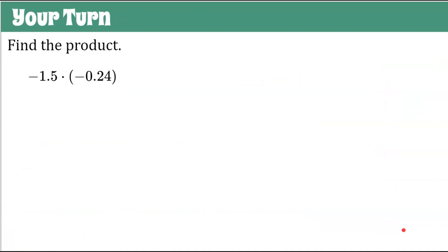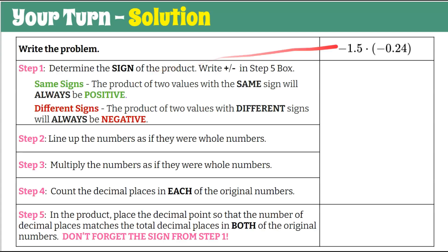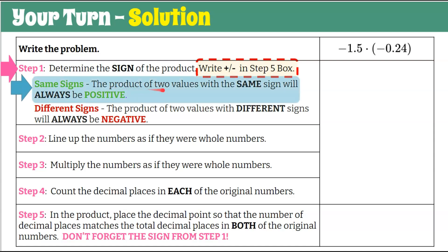One more for you to try. Find the product of negative 1 and 5 tenths multiplied by negative 24 hundredths. Go to the graphic organizer, pause, do your best work, and come back to check. Welcome back. Step one: determine the sign of the product and put positive or negative in the step five box. Our two values are negative and negative — same signs — so the product is going to be positive.